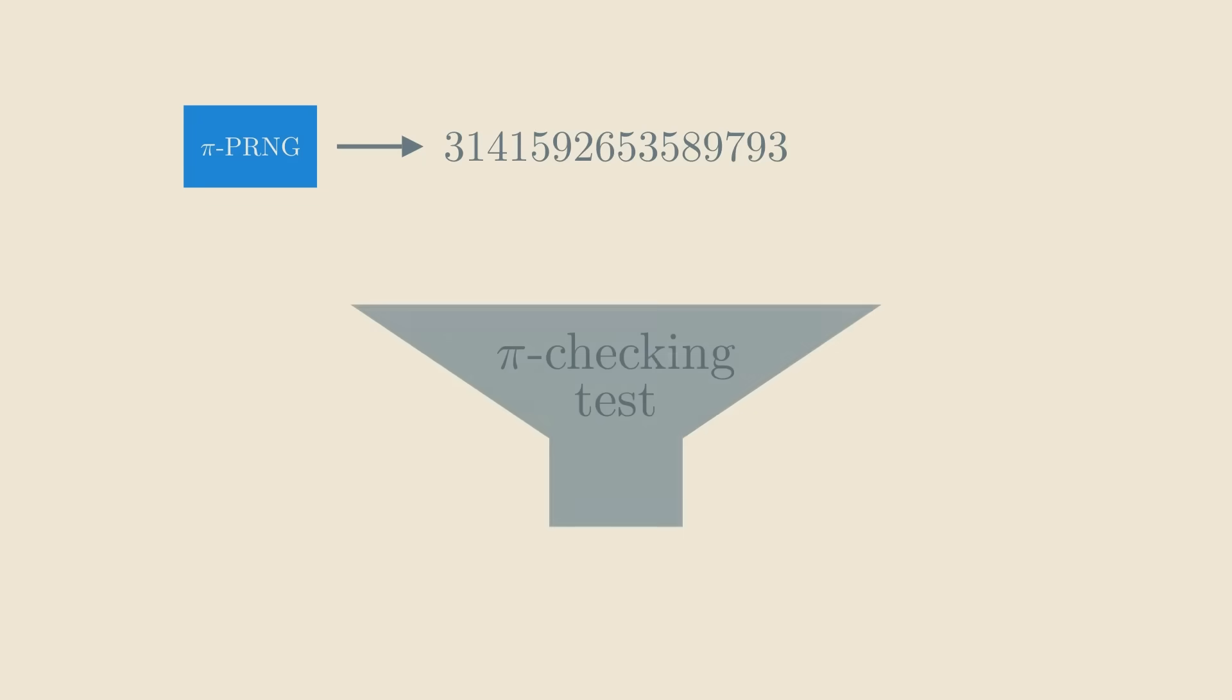But it has an obvious flaw. Consider a test that simply checks whether the input sequence is equal to the first n digits of pi. This test will be able to consistently separate truly random bits from bits coming from this generator.